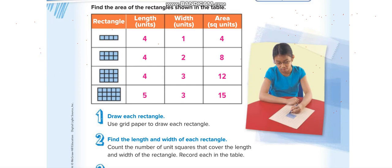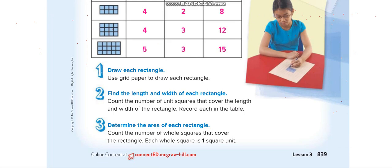Now let us start solving the lesson. On the first page, they use general units — no specific unit like centimeters or meters is given. We have a rectangle with length 4 and width 1, so 4 × 1 = 4. Another with length 4 and width 2, so 4 × 2 = 8. Another with length 4 and width 3, so 4 × 3 = 12. And one with length 5 and width 3, so 5 × 3 = 15. We simply multiply length times width.